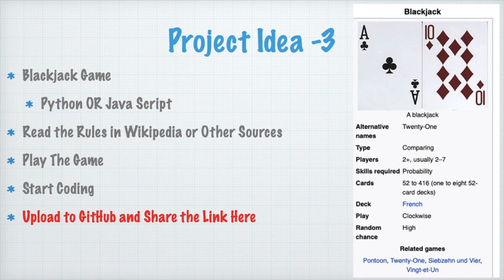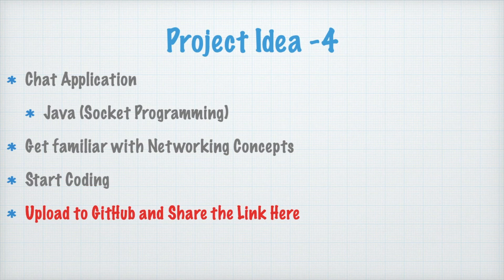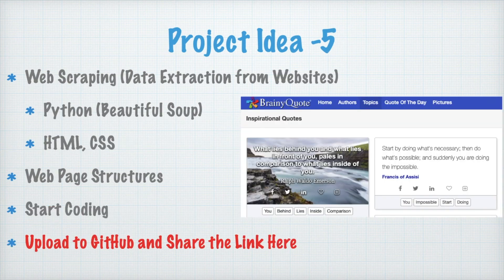The third idea is a Blackjack game. First read the instructions of the game on Wikipedia or other sources, then play the game somewhere to understand the rules, and then start coding it in Python or JavaScript. Once your project is complete, upload it to GitHub and share the link. The fourth project idea is a chat application that you can develop using Java and socket programming. You need to get familiar with networking concepts and Java socket programming basics. First complete it without a GUI, and then if you are ambitious, implement a GUI as well.